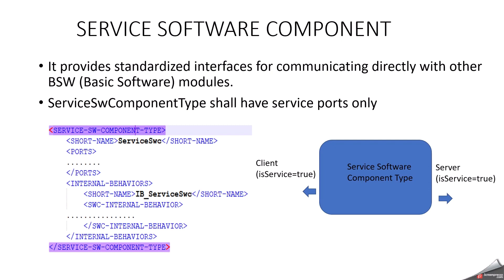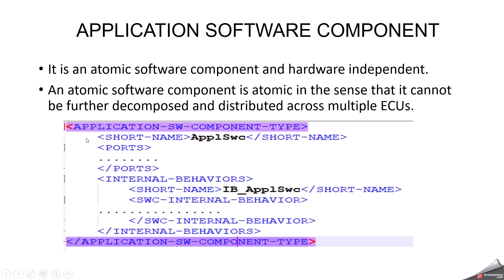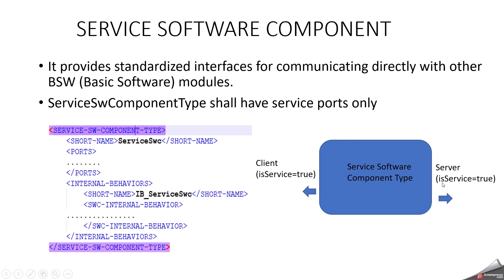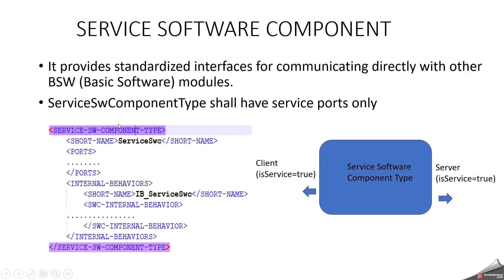Service software component provides standardized interfaces for communicating directly with base software modules. For example, if you have a software component that needs to get information from the service layer — such as diagnostic information from DCM — then on the client side, the service tag is set to true, and on the server side, the service tag is also equal to true. Service software component communicates with DCM, BCM, and collects related information. It shall have service ports only and is identified by the tag service software component type, with ports and internal behavior.